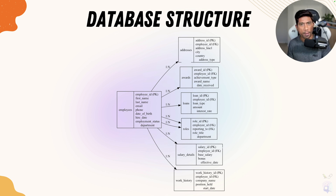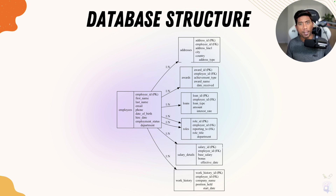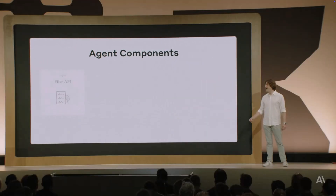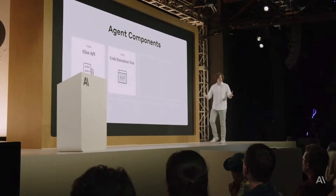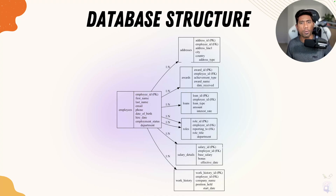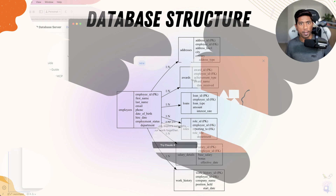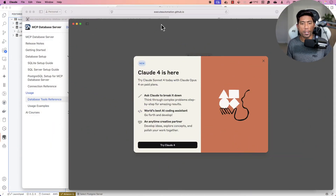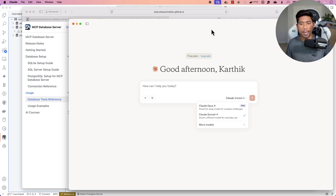We are going to query all these things in Claude Desktop, and I'll show you how to connect the MCP database server and work with this kind of complex database structure — asking questions in natural language and seeing how amazing Claude Sonnet 4 is going to perform. It now has better tooling support, a longer context window, and built-in coding capability, meaning it can translate natural language into queries much more easily. Let's jump into Claude Desktop right now.